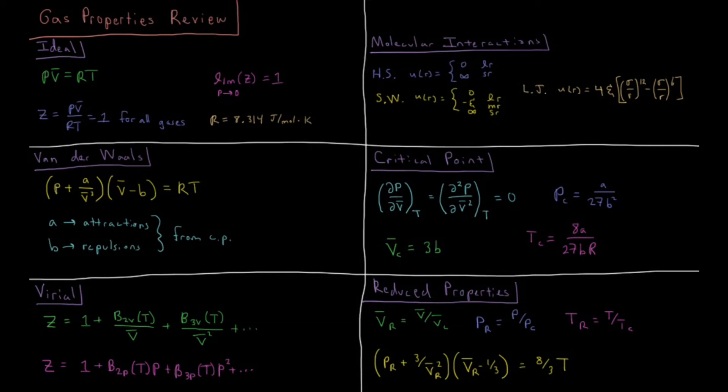This video is a review of the chapter on gas properties in thermodynamics. We start with the ideal gas equation of state PV equals nRT, or PV bar equals RT, where the pressure times the molar volume equals the gas constant times temperature.